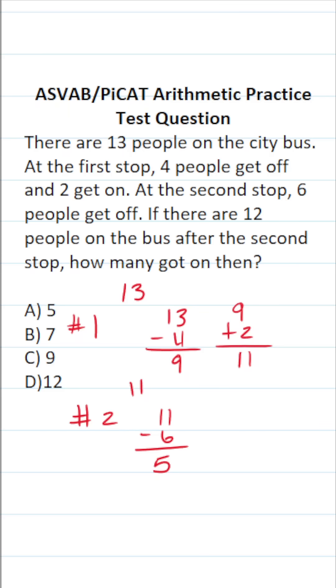So we go from having five people to 12 people. To determine how many people got on the bus at the second stop, we're going to do 12 minus five, which is seven. So that means at the second stop, seven people must have got on the bus. So this one is B.